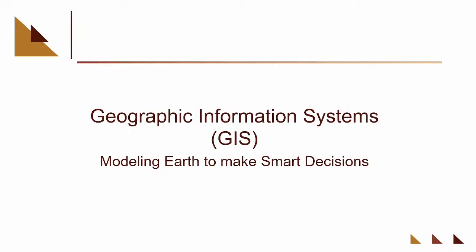What is GIS? It stands for Geographic Information Systems and the whole purpose of a GIS is really to model Earth and to make smart decisions. The idea is: can we collect data about features and things we see on Earth, put them on our computer and use it to make decisions without having to constantly go out in the field looking for stuff? The sole purpose of a GIS is to model Earth on our computer so we can use it for decision making.